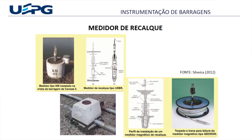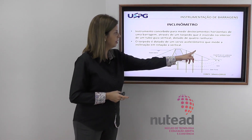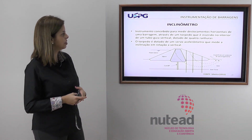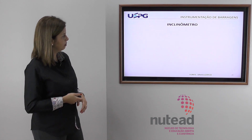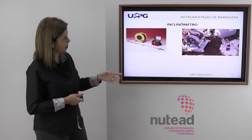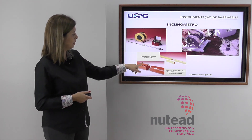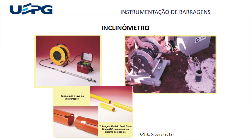Ali temos o medidor magnético e um torpedo para leitura do medidor magnético. O inclinômetro é um instrumento concebido para medir deslocamentos horizontais de uma barragem, através de um torpedo inserido no interior de um tubo-guia vertical com quatro ranhuras. Esse torpedo é dotado de um servo-acelerômetro que mede a inclinação em relação à vertical. Aqui a gente está colocando um inclinômetro para verificar esses deslocamentos horizontais, com os tubos-guia com as ranhuras para o inclinômetro encaixar.